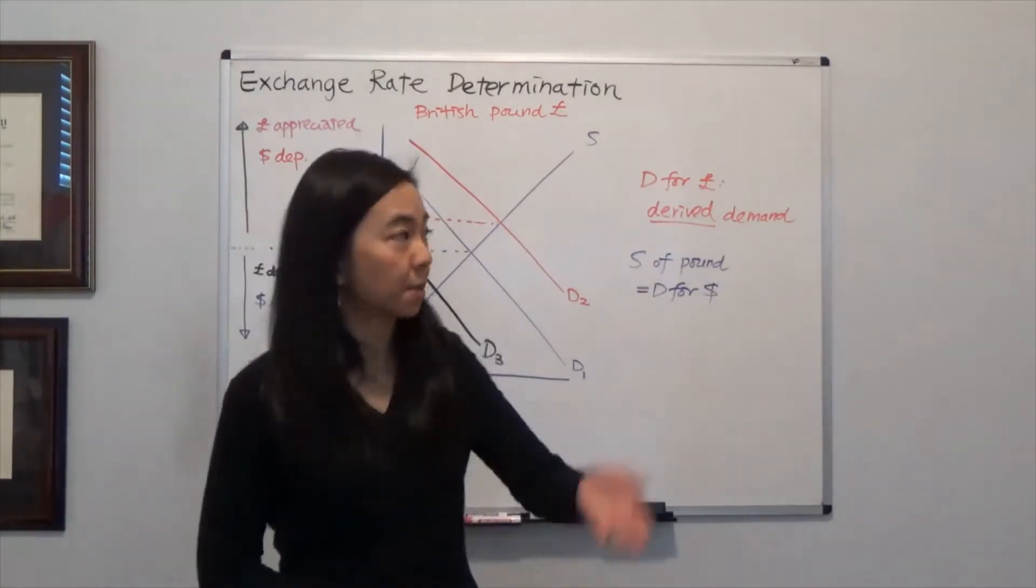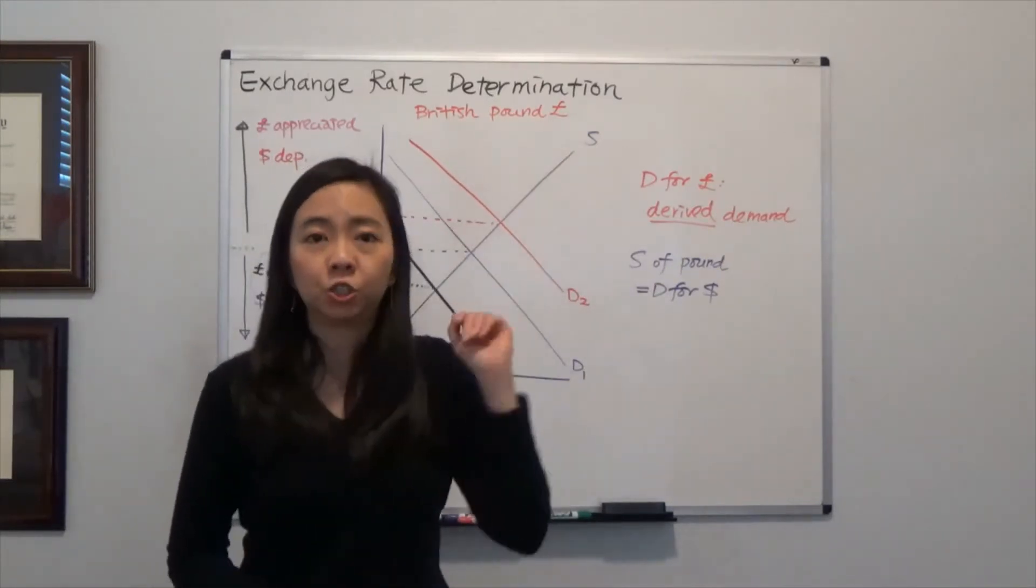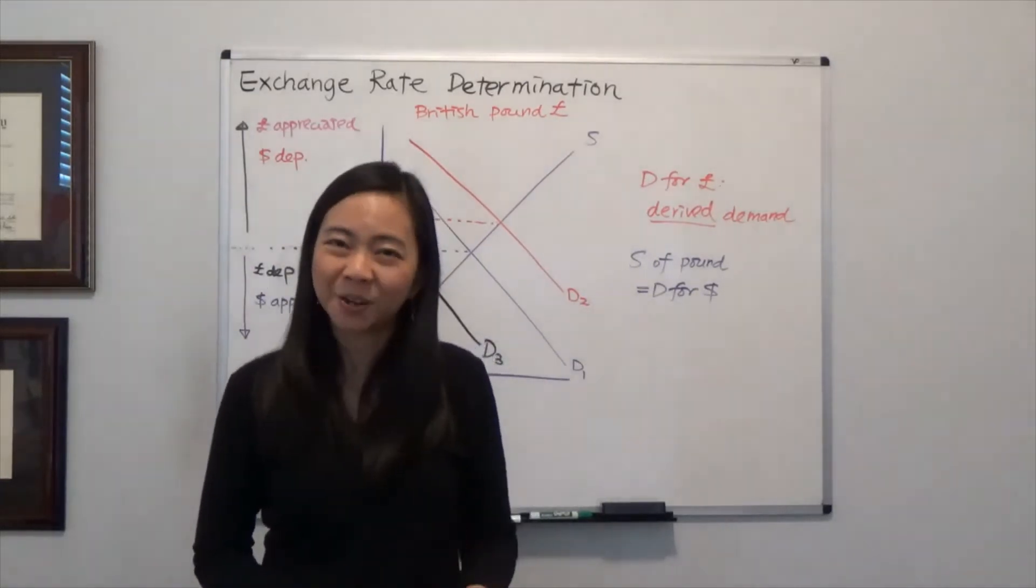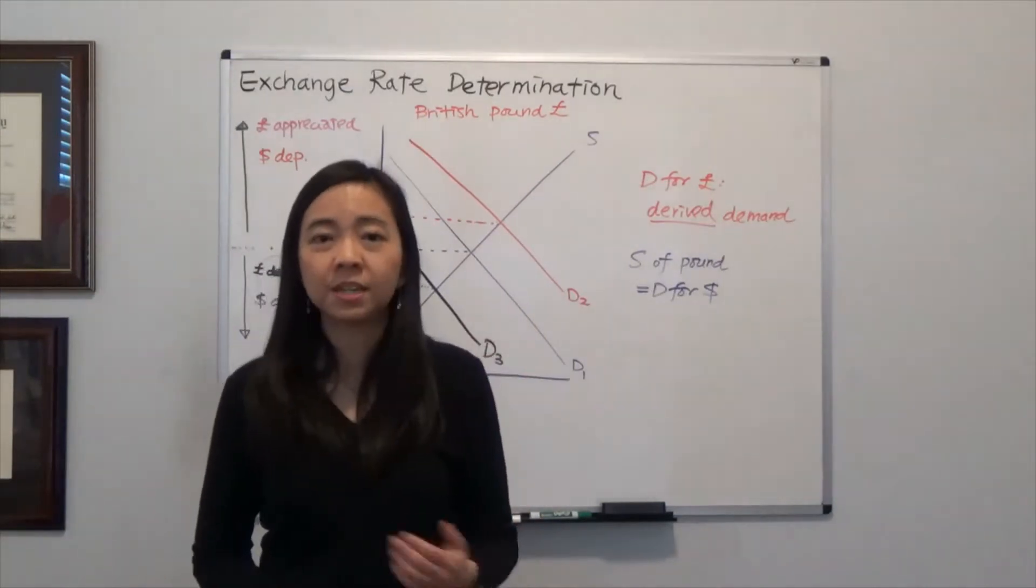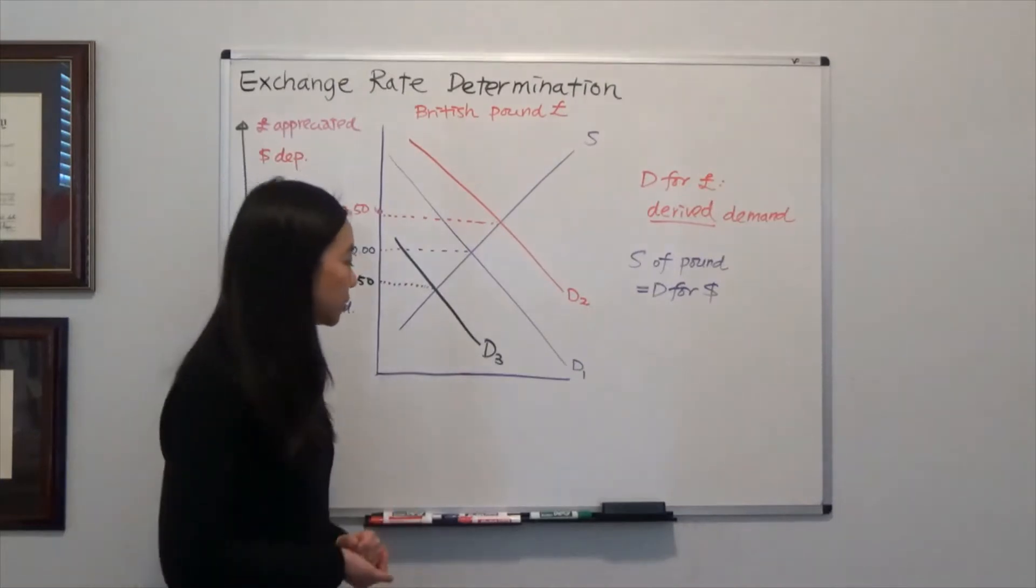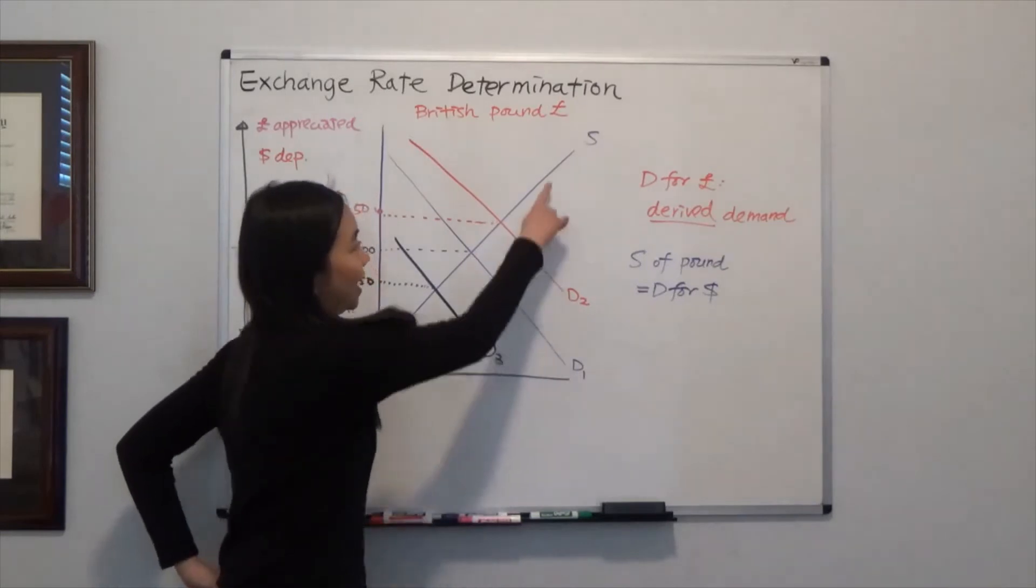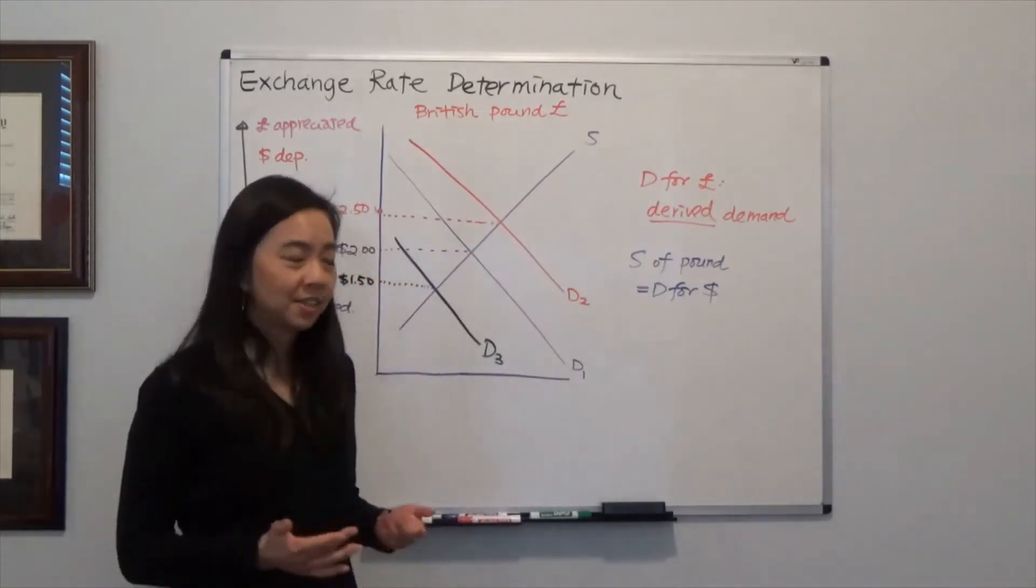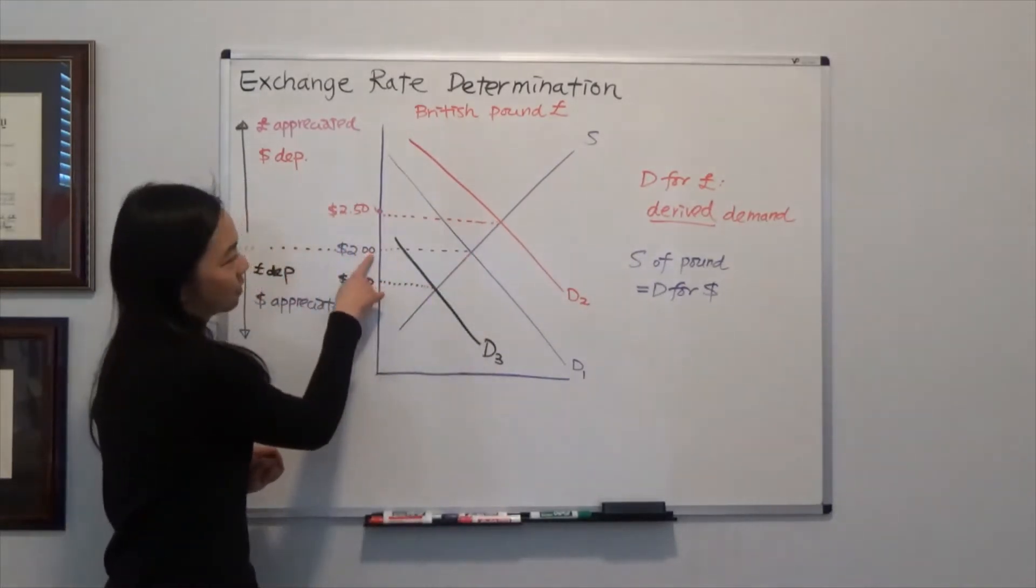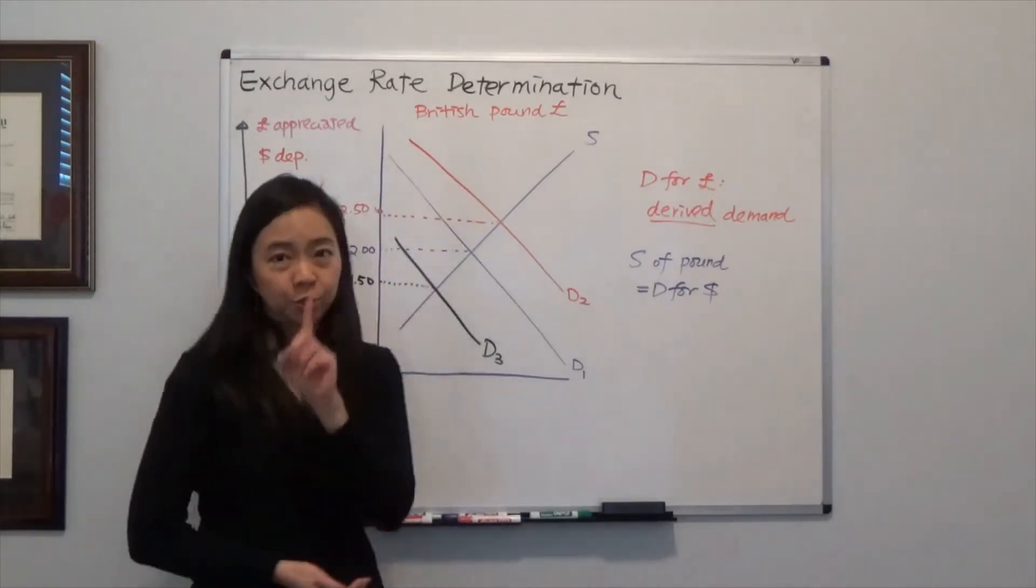The commodity in our example is the British Pound. The price of the Pound can change because of a shift in demand for the Pound or the supply of the Pound. Suppose our original demand and supply curves for the British Pound are D1 and S. We can see the equilibrium price of one pound in terms of the dollar is two dollars, meaning it takes two dollars to buy one British Pound.